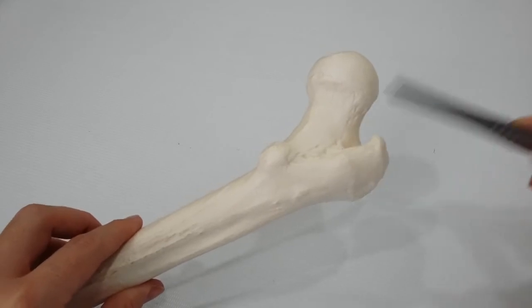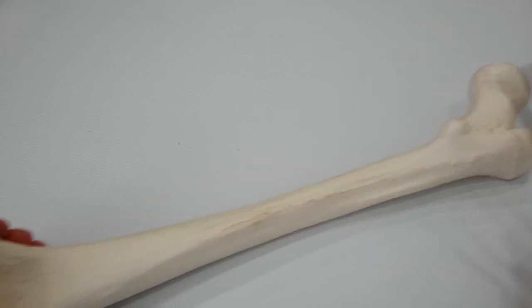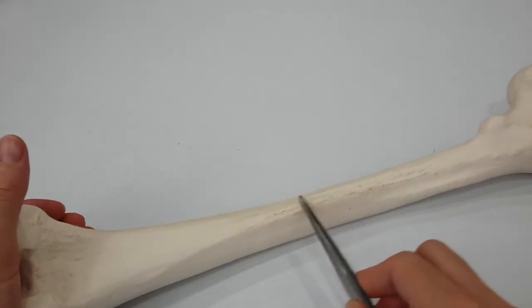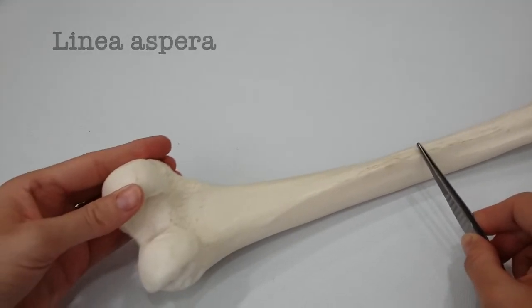The shaft of the femur is smooth and rounded on its anterior surface, but posteriorly it has a ridge called the linea aspera, to which are attached muscles and intermuscular septa.